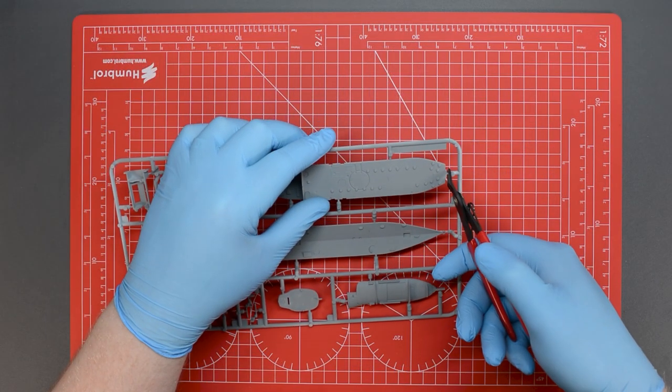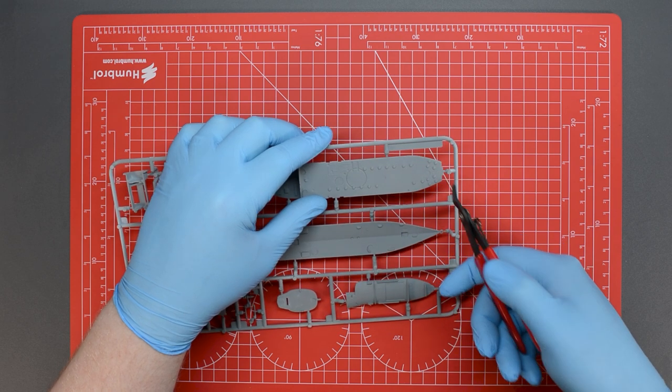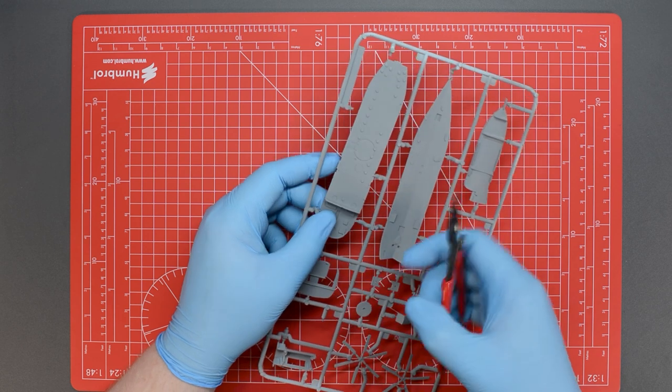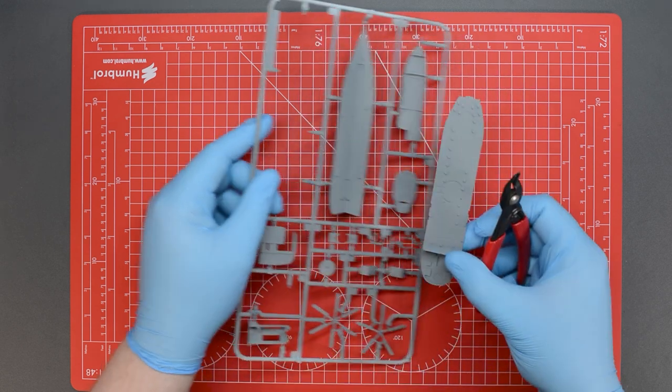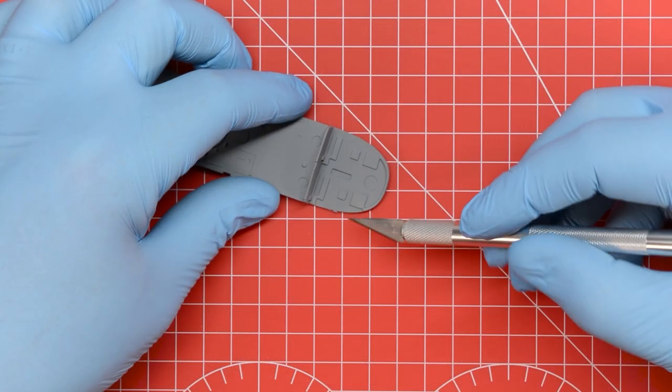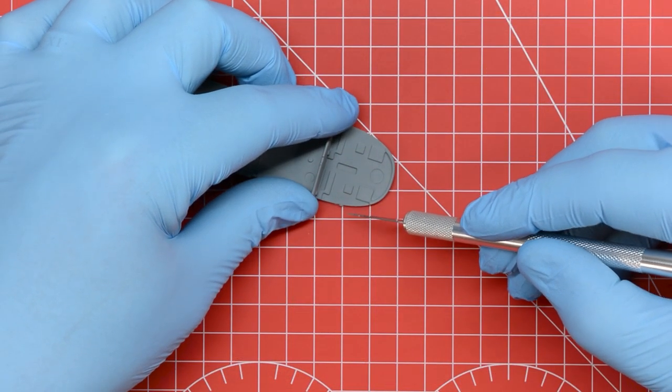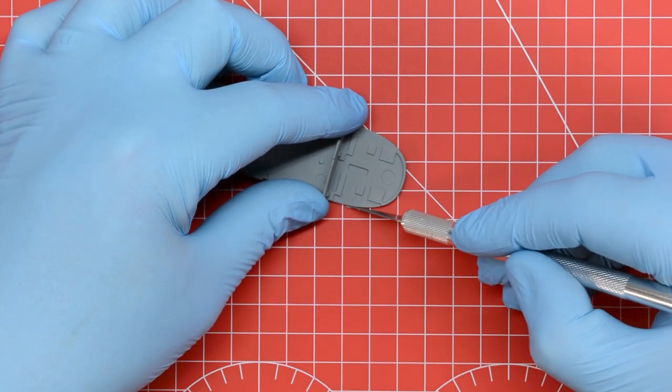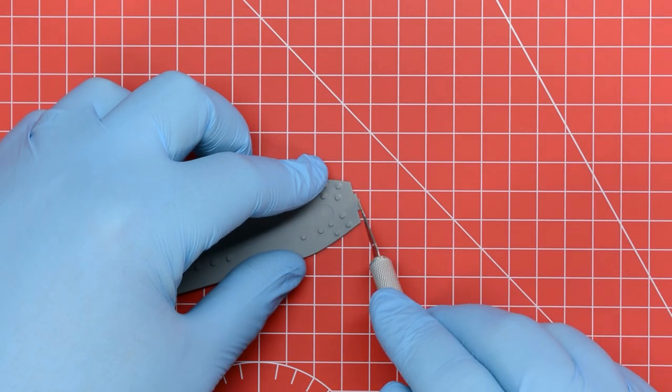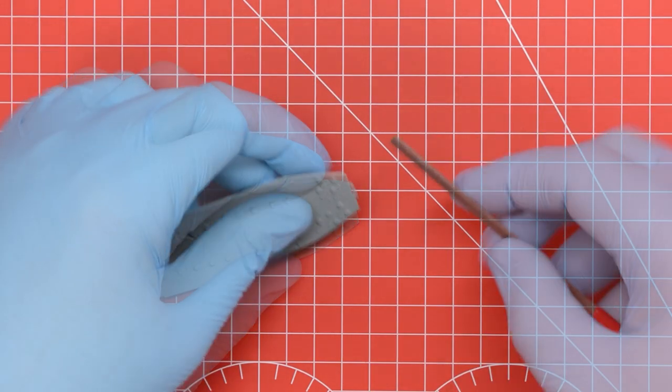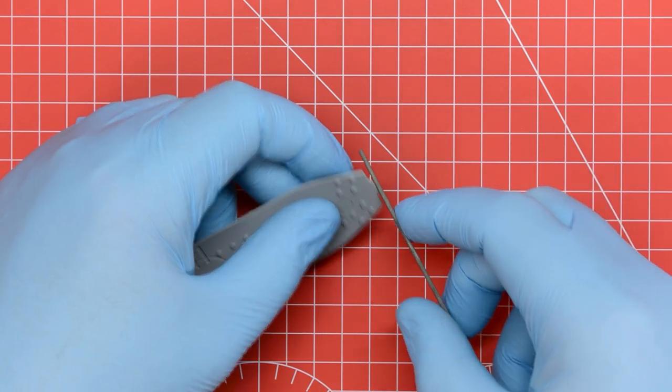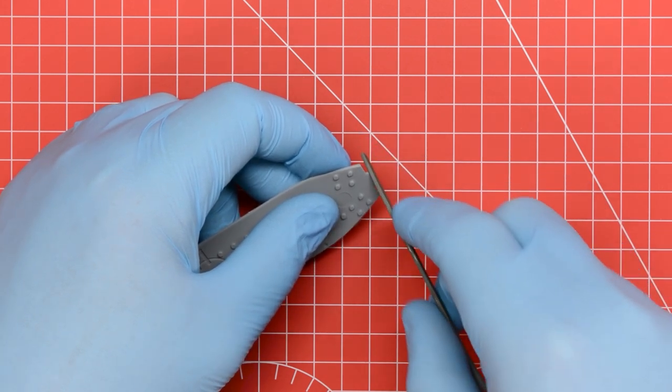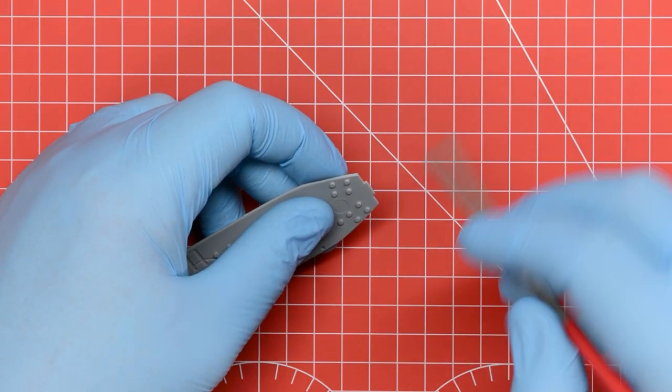After leaving the primer to cure fully we started the actual build. The first thing we need to do is remove parts from the frame. To do this we cut the frame connection points using the cutters but we did so slightly away from the model surface to avoid damaging any details. This leaves a small protrusion of plastic sticking out from the model parts which is simply trimmed away using the modelling knife. Once all of these small pieces of plastic have been cut away we can complete the final part of the cleanup process using the file to just remove any excess plastic that's left behind. This is the basic cleanup process that we'll use on all of the parts throughout the video.